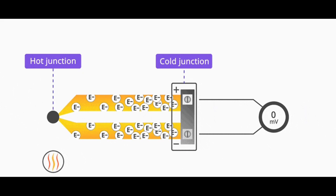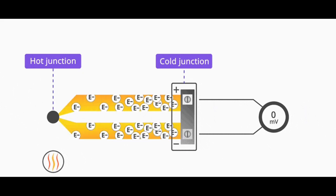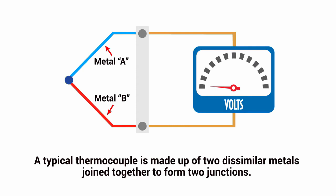When the measurement junction is exposed to a temperature gradient, a voltage is generated due to the Seebeck effect. A thermocouple is made of two dissimilar metals joined together to form two junctions.